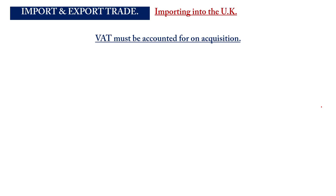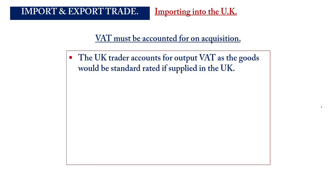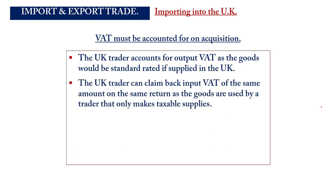When goods are imported into the UK, the UK trader must account for VAT on acquisition. The goods are treated as standard rated (20%). The trader then claims that same VAT as an input on the same return, so the net effect is zero — no VAT payable and no VAT claimable. However, if the business makes exempt supplies, they cannot claim the input, so the output VAT registered will not be paid to HMRC.